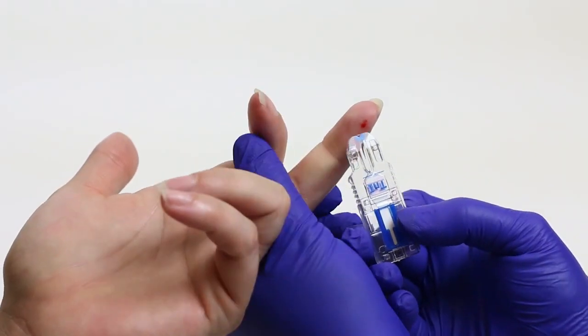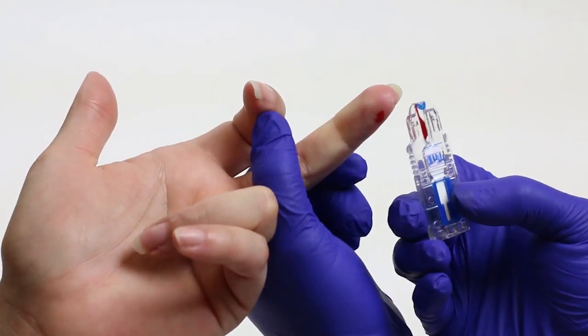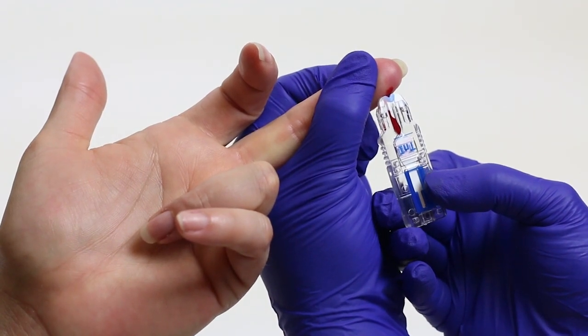Place the sample application zone to the puncture site, allowing the blood to fill the receiving channel. Massage the finger as needed to obtain enough blood to reach the fill line.